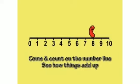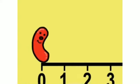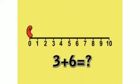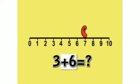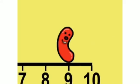Let's have a look at a short video. Come and count on the number line — see how things add up. If you count on the number line, you can add and subtract. Did you know you can use a number line to add and subtract? Let's use the number line to find out what three plus six equals. Start at zero and jump three spaces, then jump six more spaces because it's plus six. What number am I standing on? Nine — so that's the answer. A number line is easy to use, isn't it? And it's great exercise for a jumping jelly bean.